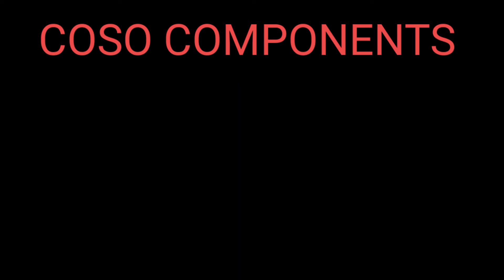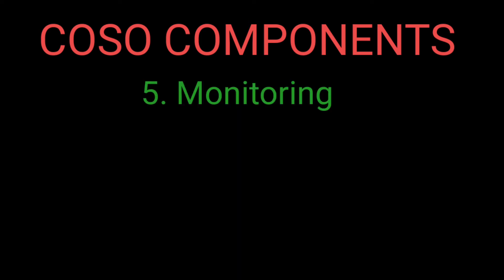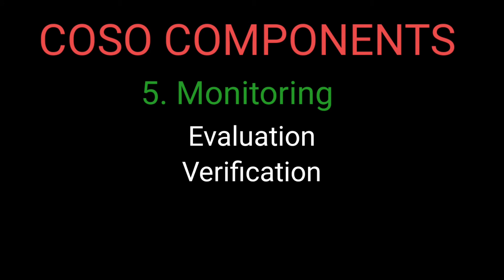The last component is Monitoring. Monitoring of activities includes consistent evaluations, verifying that each of the five components of internal control are present and working correctly. It performs ongoing or periodic evaluation of internal controls and helps in communication of internal control deficiencies.